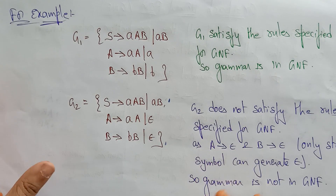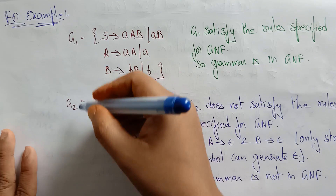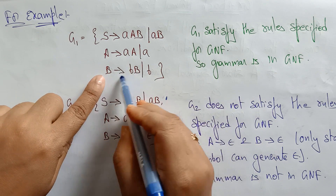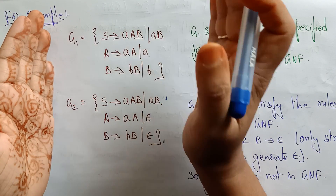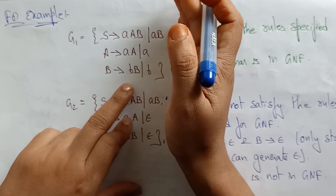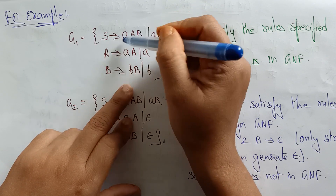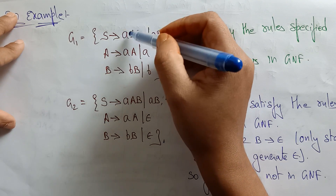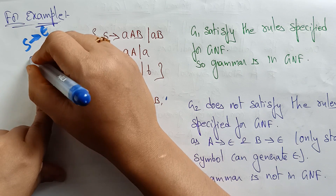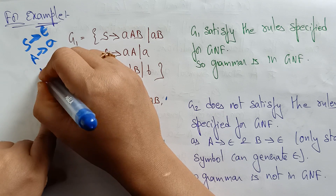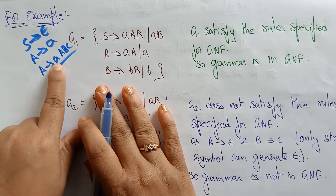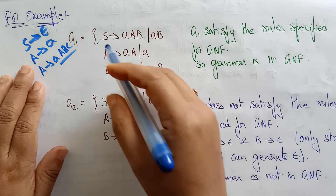Let's check whether a given grammar is in GNF or not with two grammars G1 and G2. In G1: S → AAB | AB, A → AA | a, B → BB | b. The GNF rules state: the start symbol generates epsilon, a non-terminal generates a terminal, or a terminal is followed by any number of non-terminals.